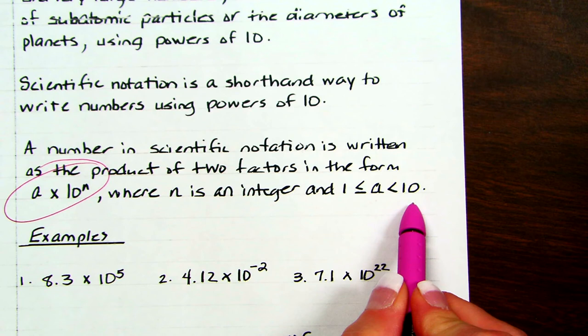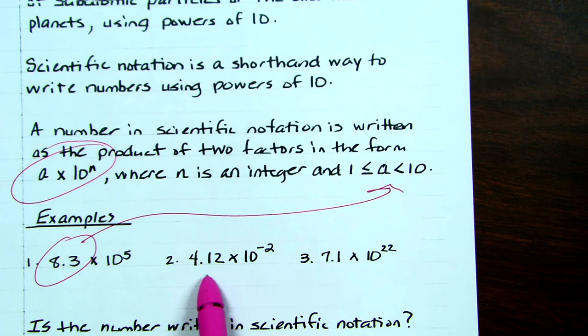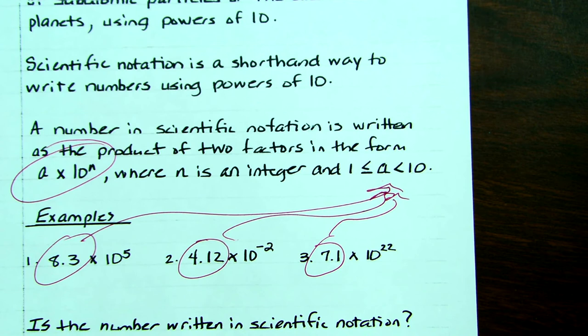So look at these examples. This is in scientific notation. This number is between 0 and 10, and then you have a power of 10. And this is also in scientific notation because this is also between 1 and 10. And this one is also in scientific notation because 7.1 is between 1 and 10. So these numbers have to always be between 1 and 10, but they can be equal to 1.